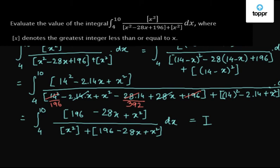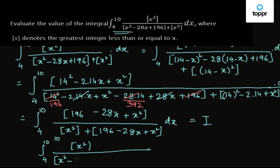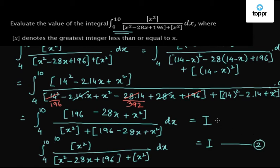Let's name this integral I. So we have I equal to this second integral, as well as I equal to the original integral from 4 to 10 of: x squared upon greatest integer of x squared minus 28x plus 196 plus greatest integer of x squared, dx.